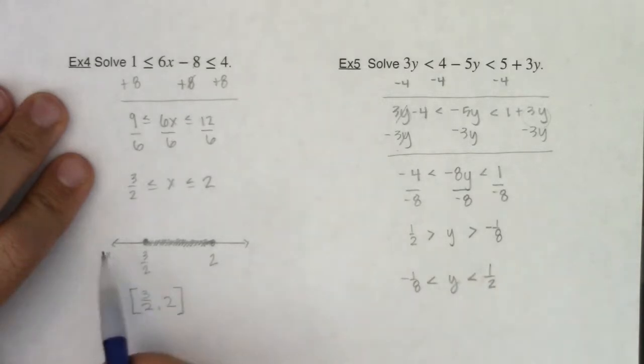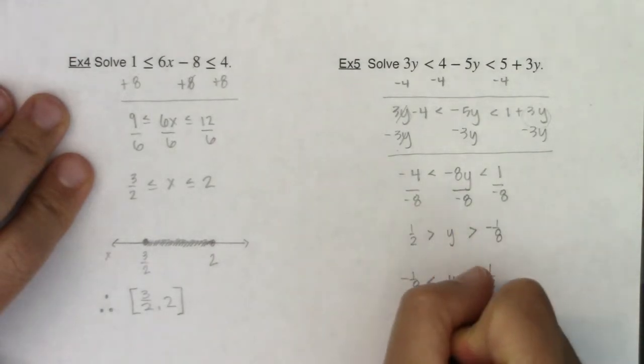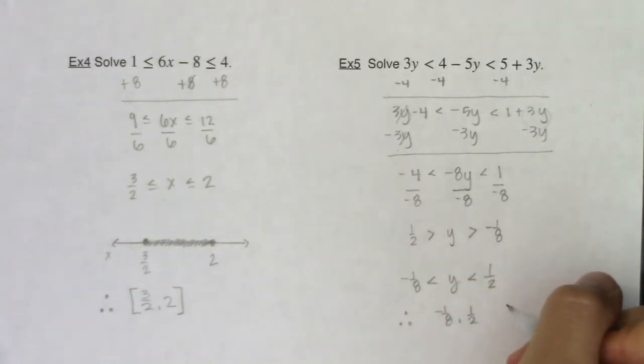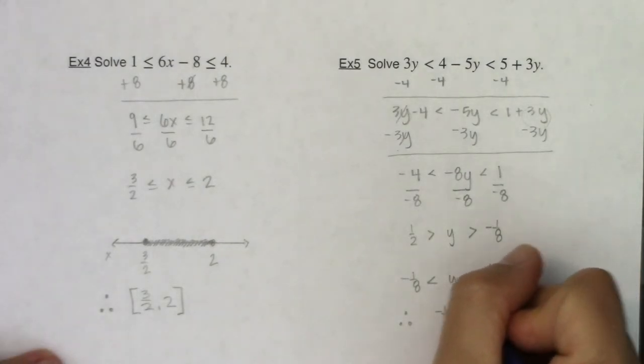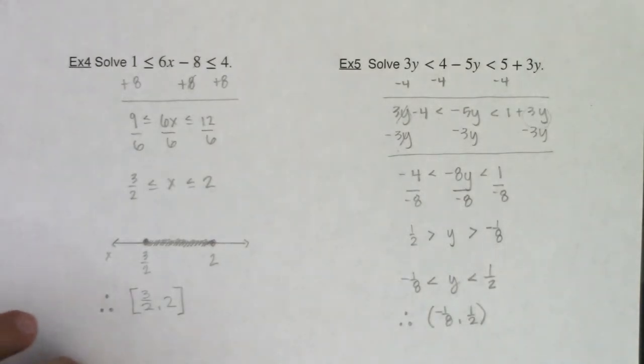So now we're looking at y is trapped between negative one eighth and positive one half. And you can go make the number line if you want. But eventually you want to get to the point where you're thinking, I can just write this in interval notation. So my answer is going to be my low of negative one eighth, my high of positive one half. And because each of these have strictly less than symbols, I'm just going to put the parentheses there. I don't want to include them in my answer.